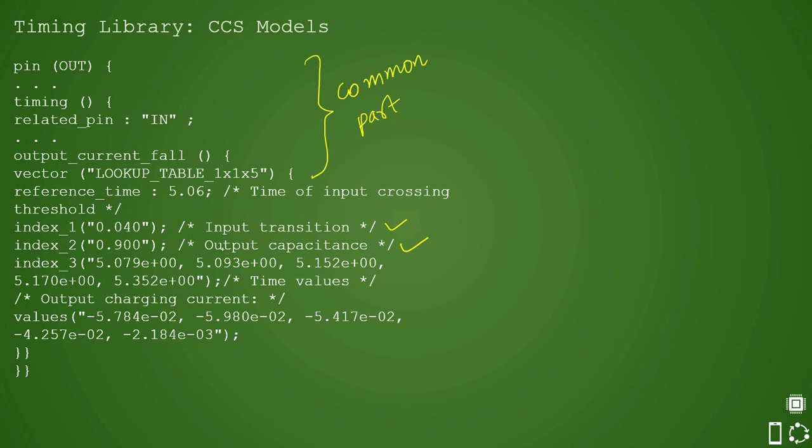Index underscore 3 is also there and that is your delay value. So we have an additional index here, an additional parameter which is used here, and it refers to the time values and the table values refer to the corresponding output current. So now here you have some table values which represents the current.